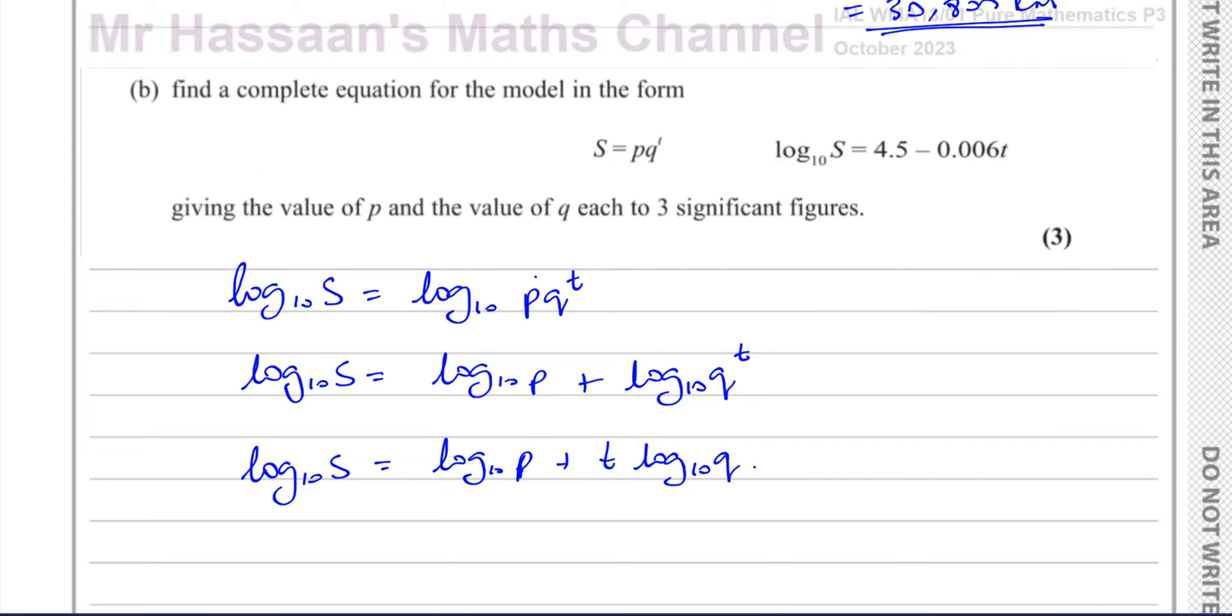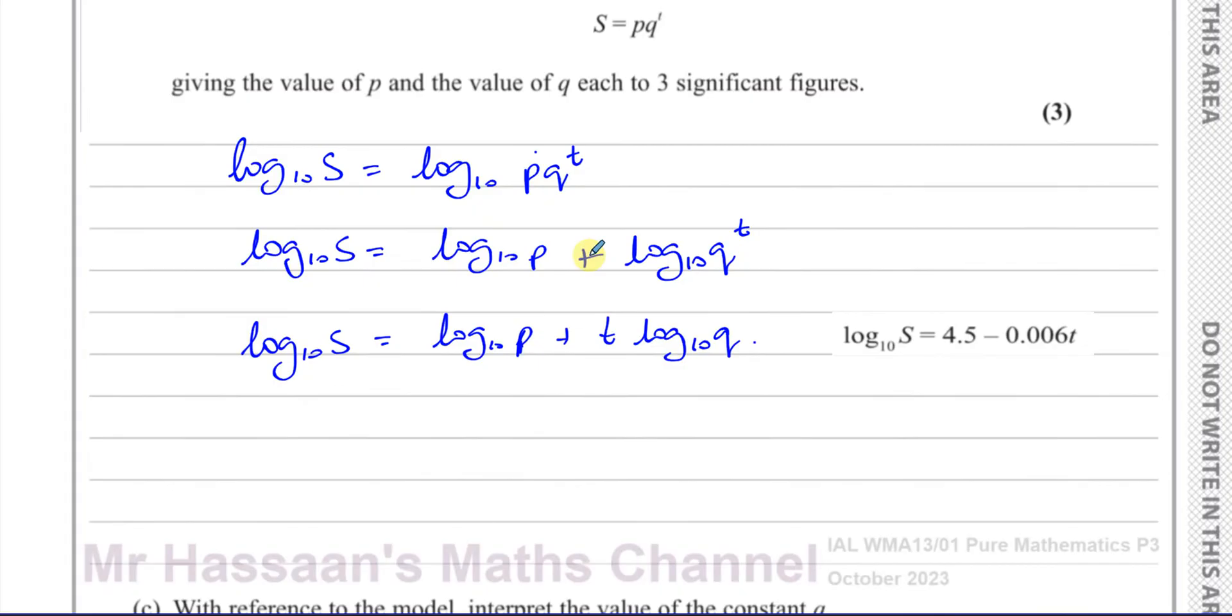Now if we compare that to what we have from the beginning of the question, we can see that 4.5 is in the place of log₁₀(p), and you can see that negative 0.006 is in the place of log₁₀(q). They're in the same place as each other, so we can compare them and say that means log₁₀(p) must equal 4.5, and we can also say log₁₀(q) equals negative 0.006, because it's t times that.